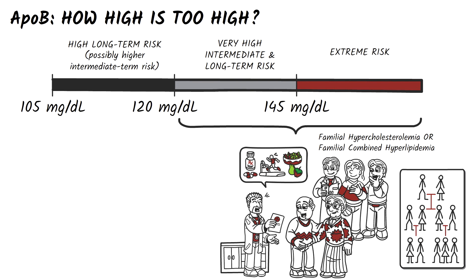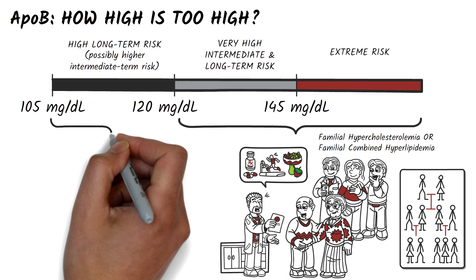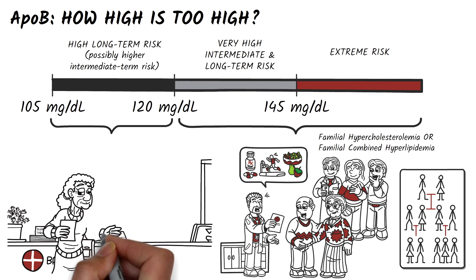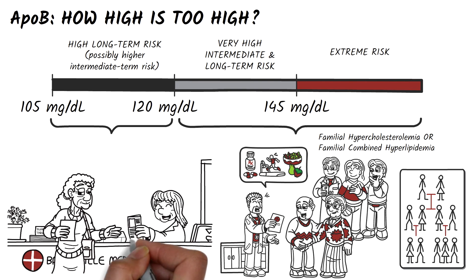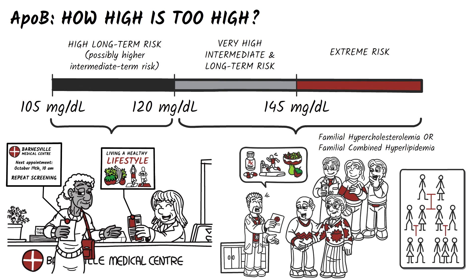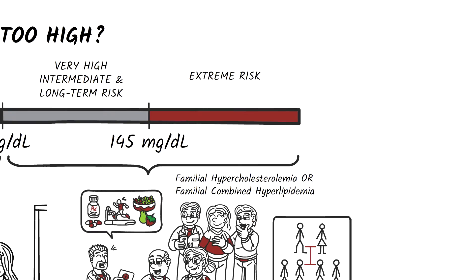If your patient's ApoB level falls in the lower range, you should repeat and confirm these findings at the next clinic visit, and recommend lifestyle measures such as healthy diet, exercise, stopping smoking, etc.